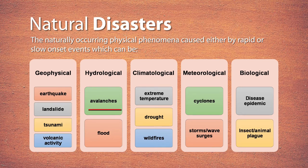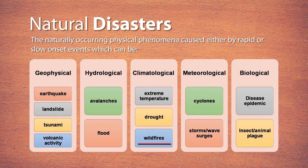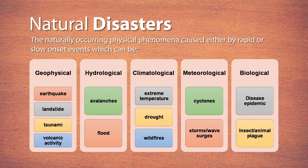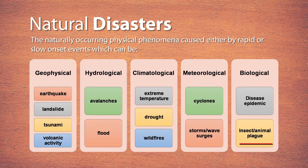Hydrological disasters like avalanches and floods involve water playing an important role. Climatological disasters result from changes in climate — extreme temperature, drought, and wildfire. You can ask students to collect examples: what happened in the Amazon forests, what is happening in the Middle East in extreme summers, or in the Marathwada region due to drought. Meteorological disasters include cyclones, storms, and wave surges. Biological disasters include disease epidemics and insect or animal plagues. There are many examples of natural disasters.